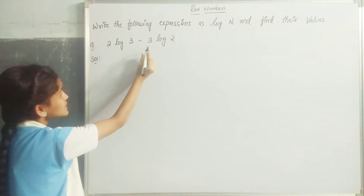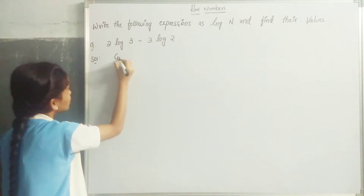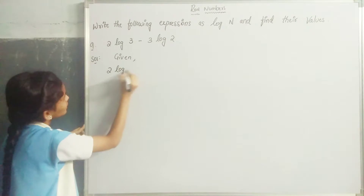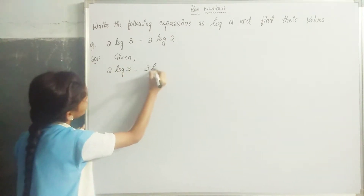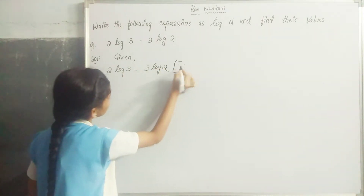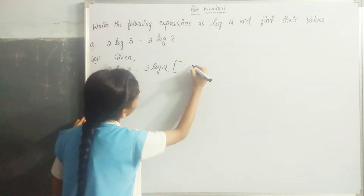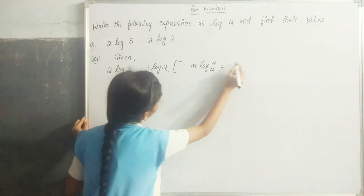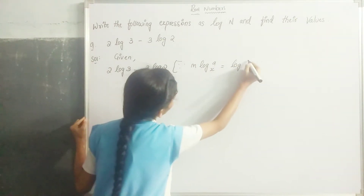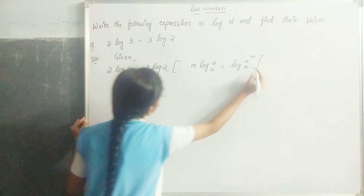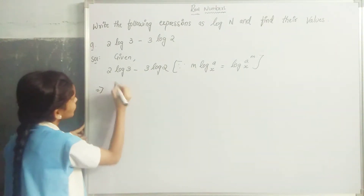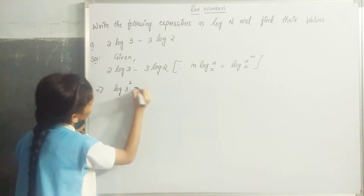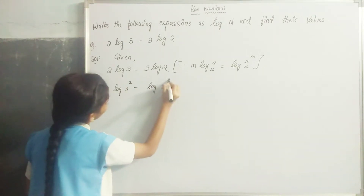Given 2 log 3 minus 3 log 2. Since it is in the form of m log a to the base x equals log a power m to the base x, it becomes log 3 squared minus log 2 cubed.